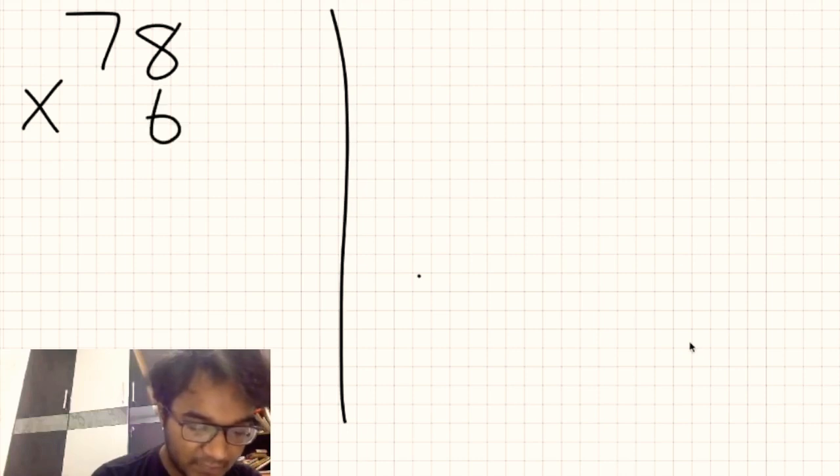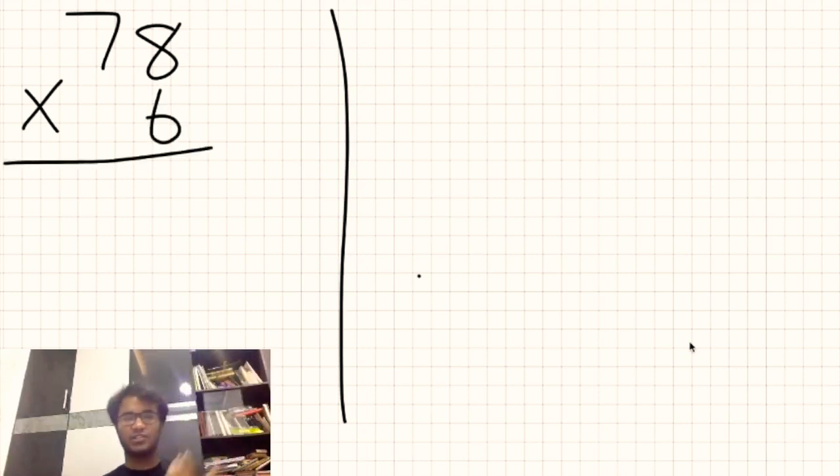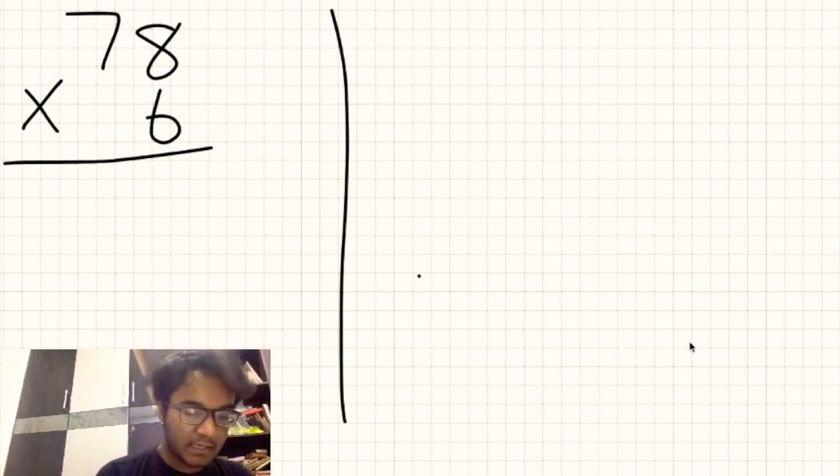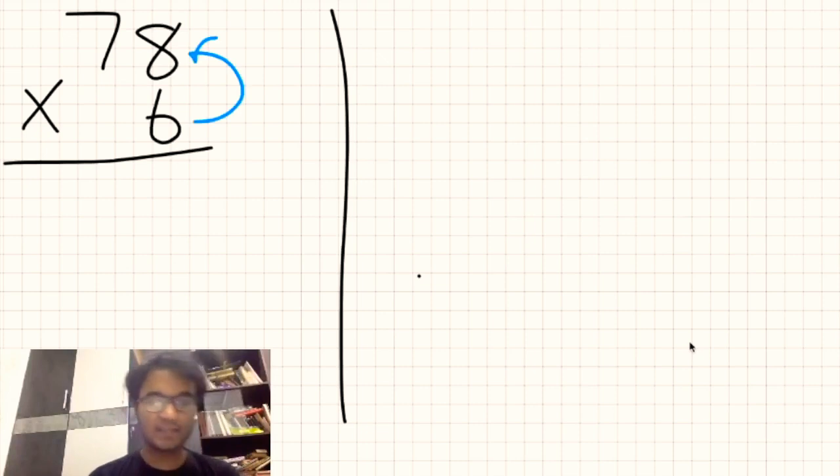And the method which is going to be on the right side is going to be the method which I employ when I do my calculations. So let's start off with relatively easier questions and we'll eventually make this bigger and in the subsequent videos use the same principles to do bigger calculations. So let's take a very simple question right here. Let's take 78 multiplied by 6, double digit number multiplied by a single digit number and the left side of the pane which I'm writing at right now will be showcasing the fundamental method, the regular school method which we do.